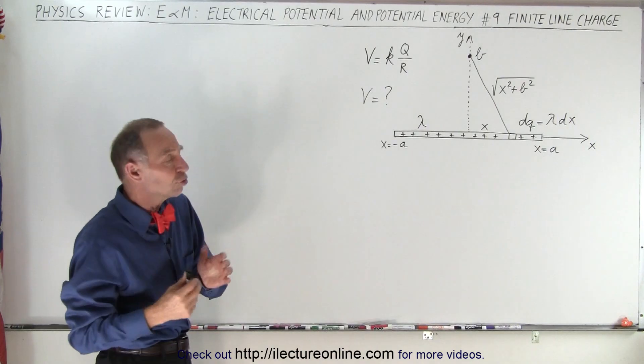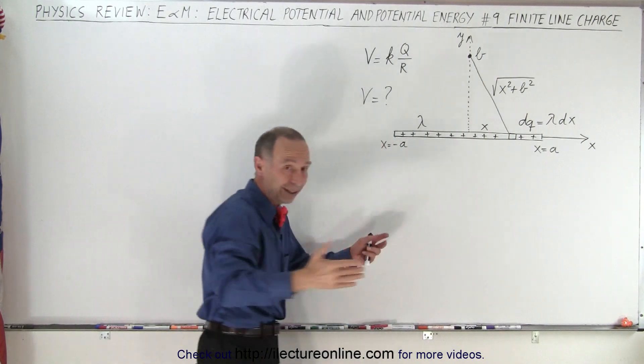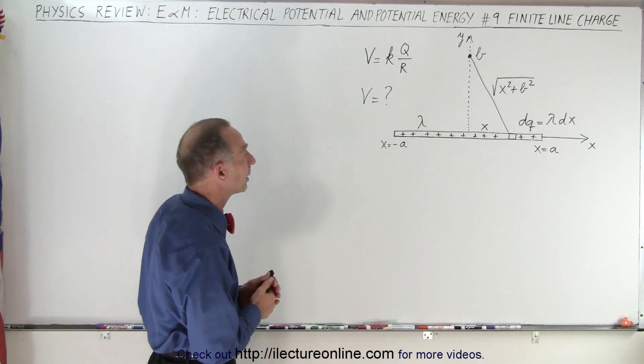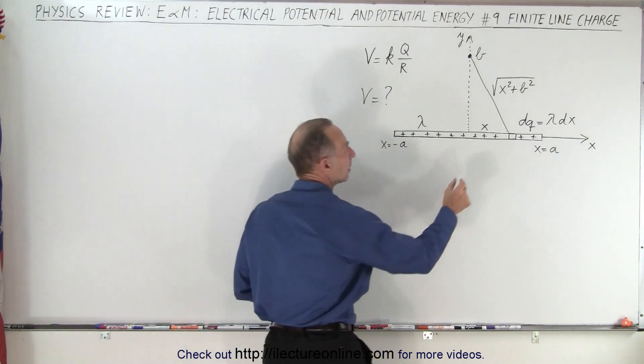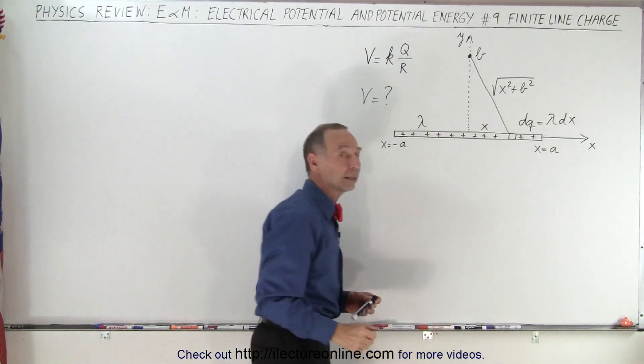So if we have a point charge we can use this equation, V equals kq over r, but of course there's not a point charge, there's a line charge there. So how do we deal with that? Well we're going to have to find the potential due to a small little segment of it and then integrate it across the entire line.